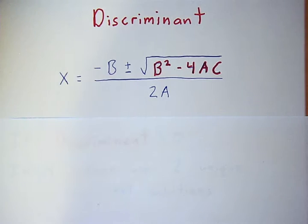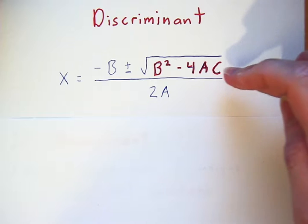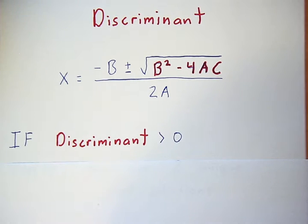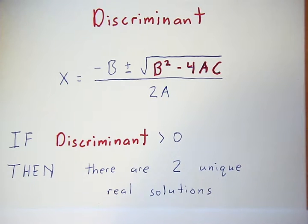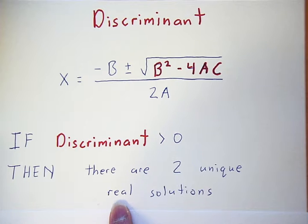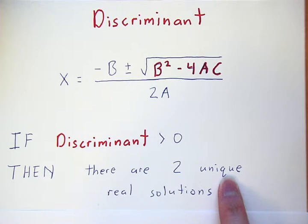The discriminant determines a lot of different things about our equation — the equation that we use the quadratic formula on. If the discriminant is greater than zero, then that equation will have two unique real solutions. When we say 'real,' we're talking about the type of numbers. 'Unique' means the solutions will be different from each other.